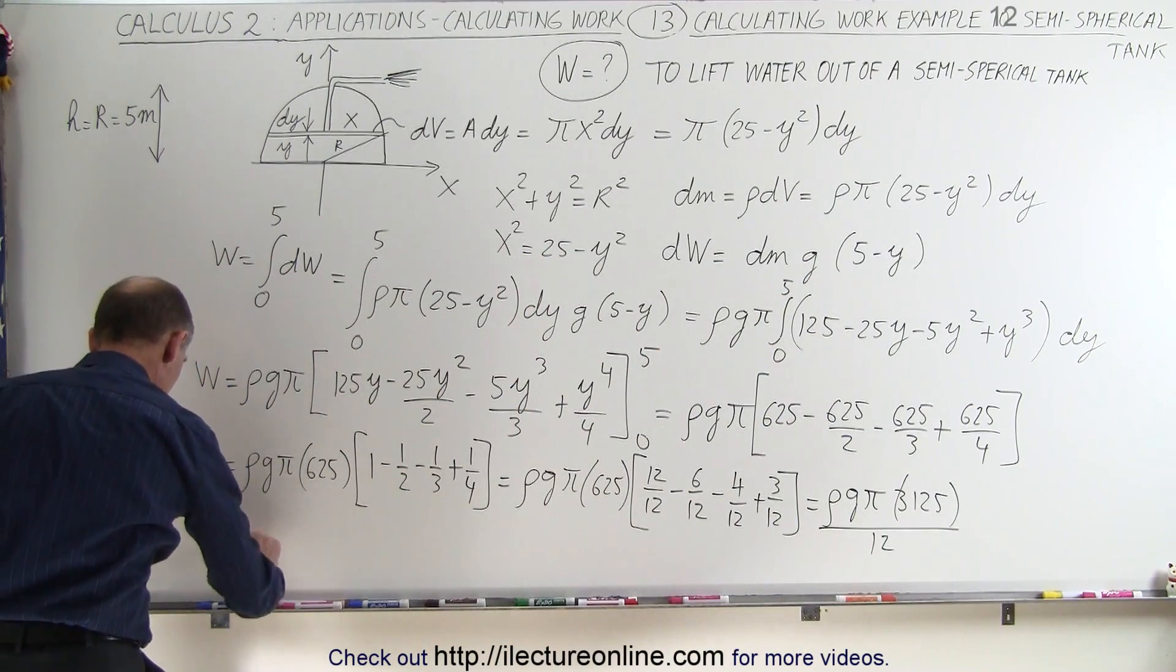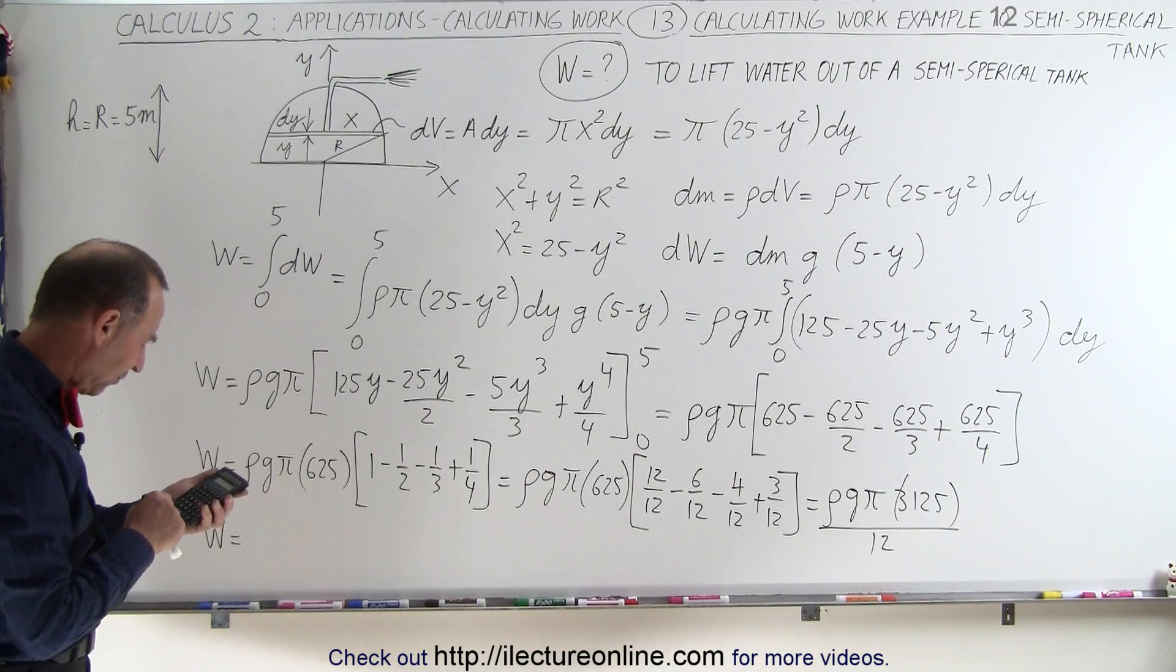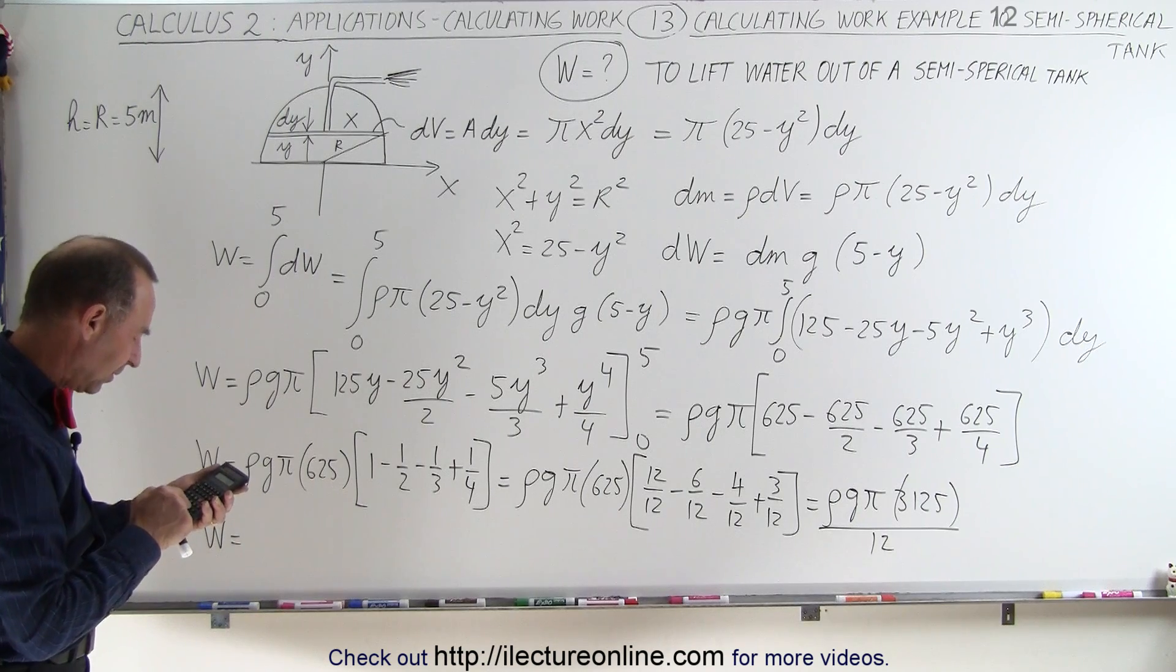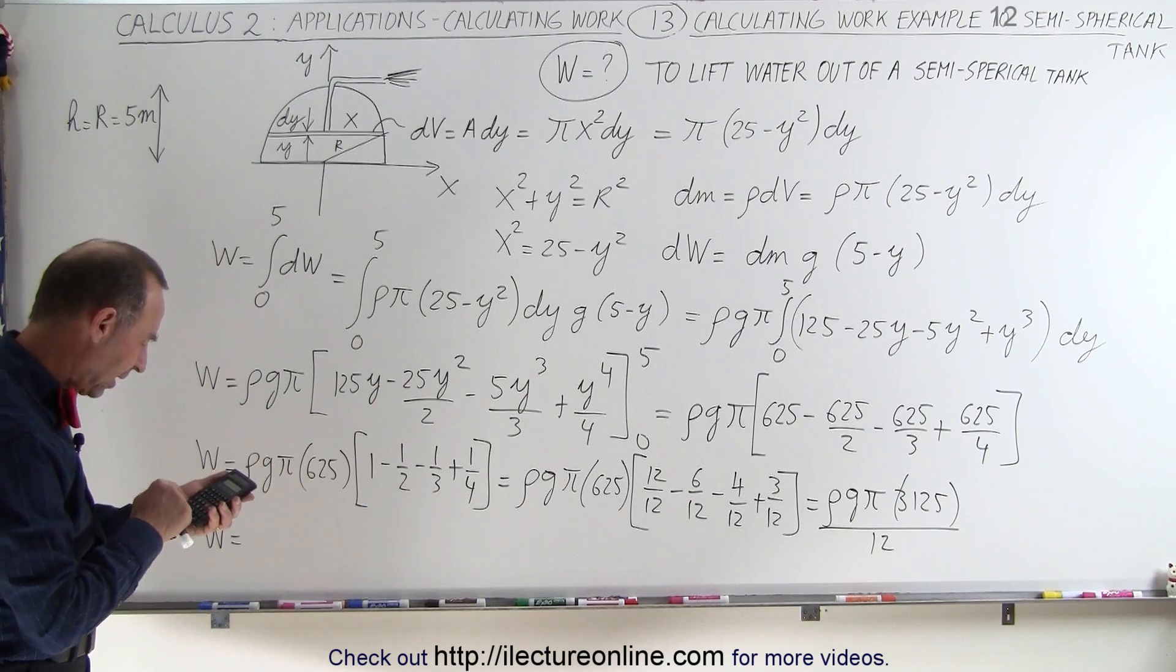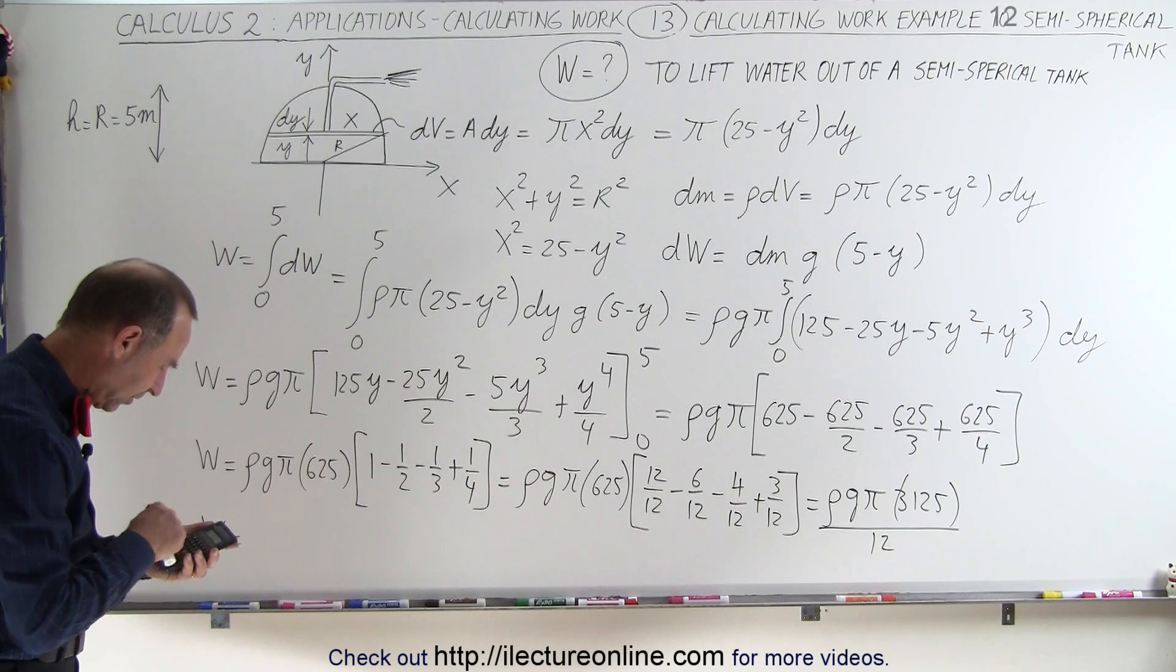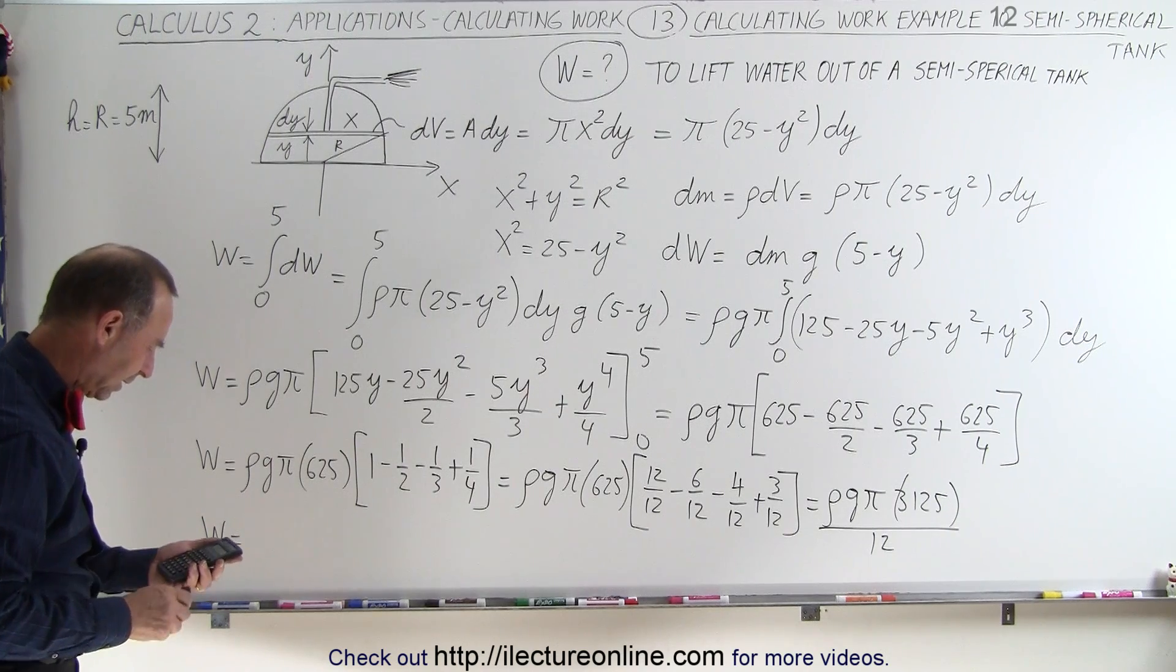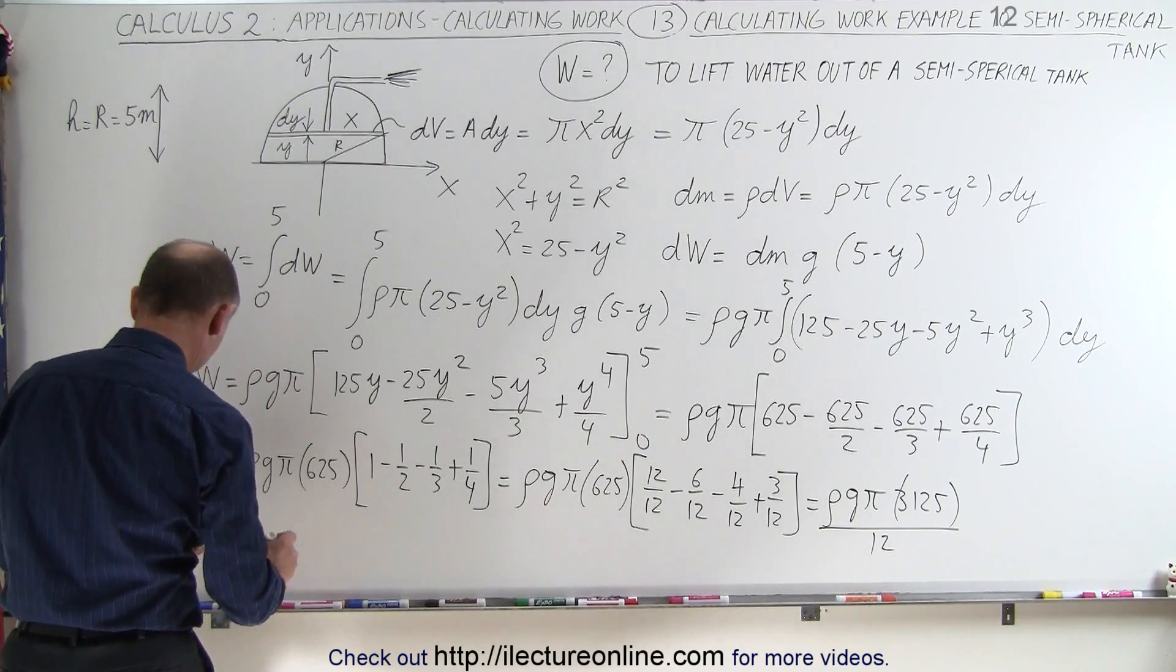Work done equals, let's go ahead and calculate that out. So we have 1,000 times 9.8 times π times 3,125 divided by 12, and that gives us 8.02 times 10⁶.